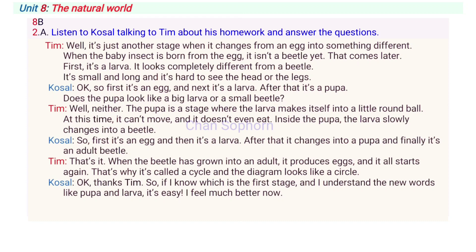OK. So first, it's an egg, and next, it's a larva. After that, it's a pupa. Does that pupa look like a big larva or a small beetle? Well, neither. The pupa is a stage where the larva makes itself into a little round ball. At this time, it can't move and it doesn't even eat. Inside the pupa, the larva slowly changes into a beetle. So first, it's an egg, and then it's a larva. After that, it changes into a pupa, and finally it's an adult beetle.